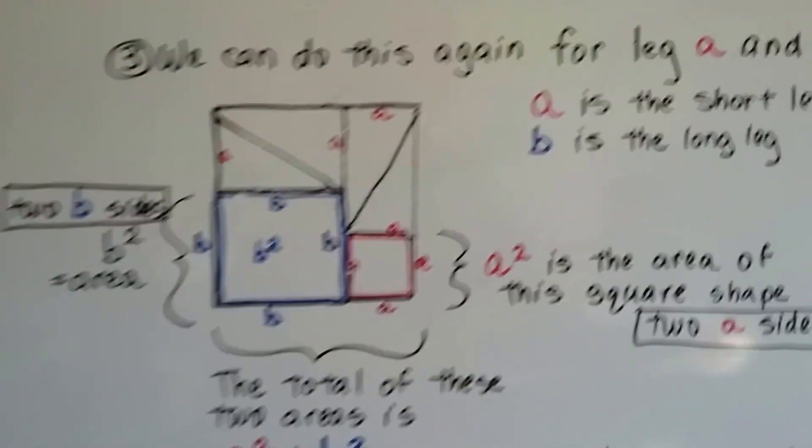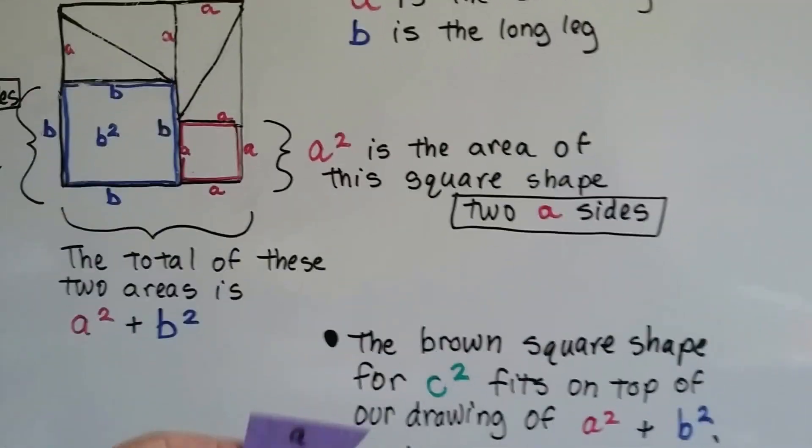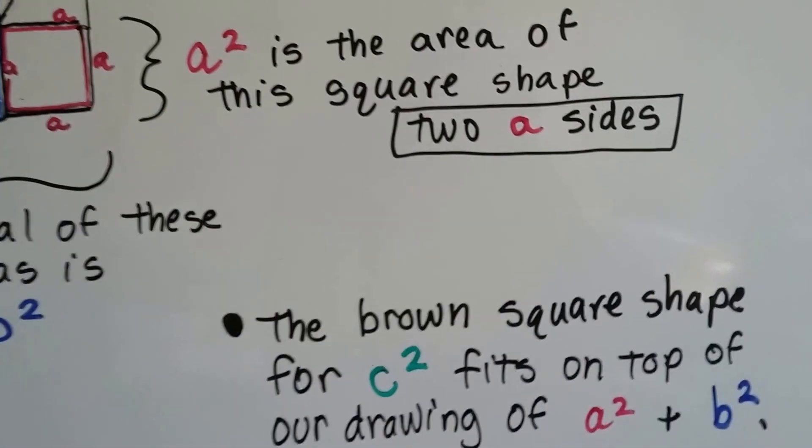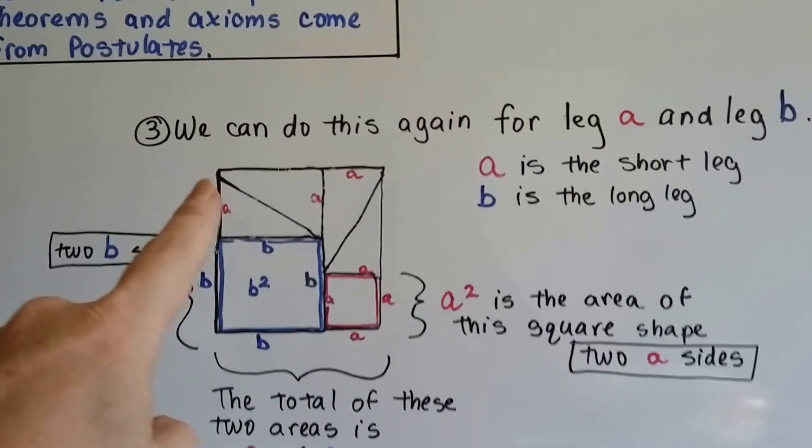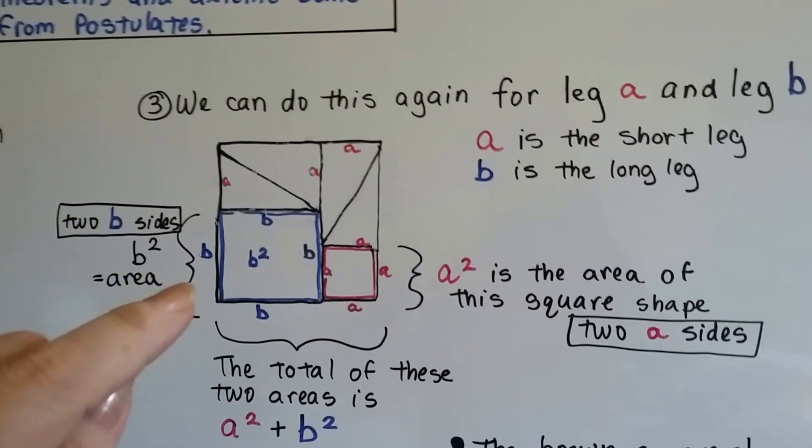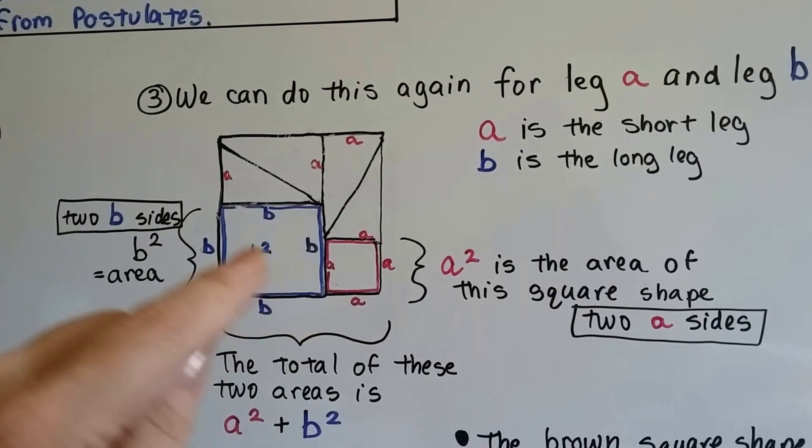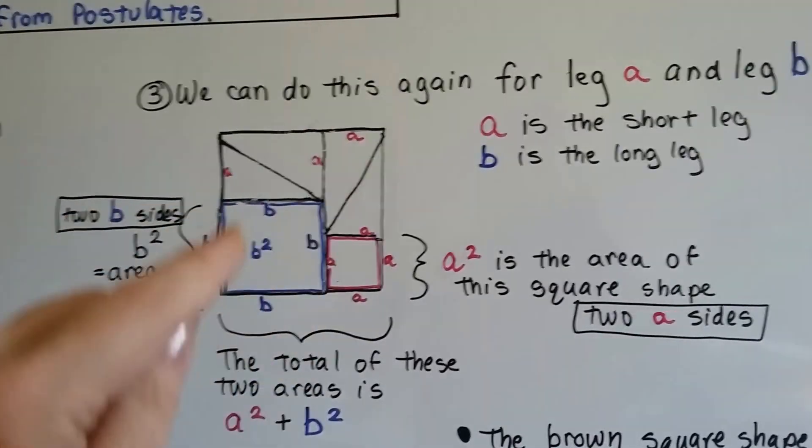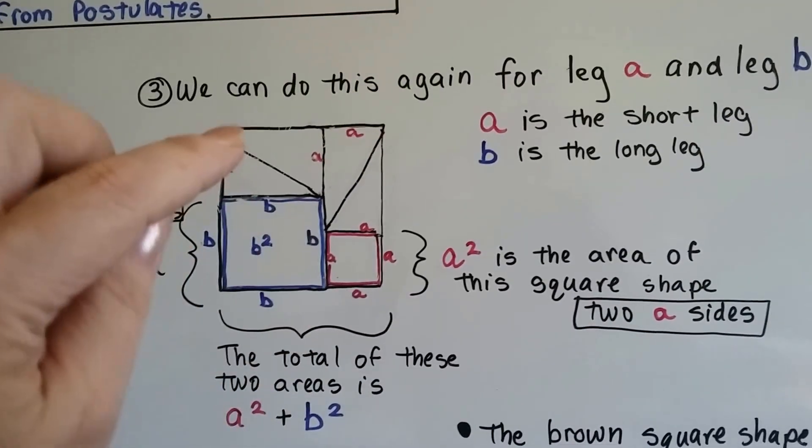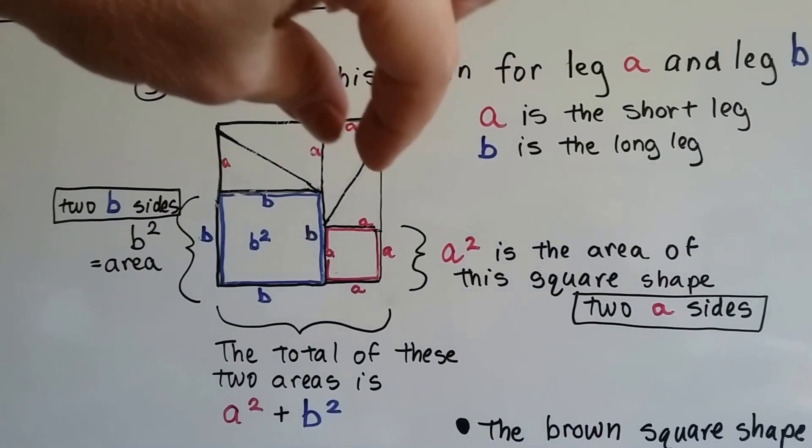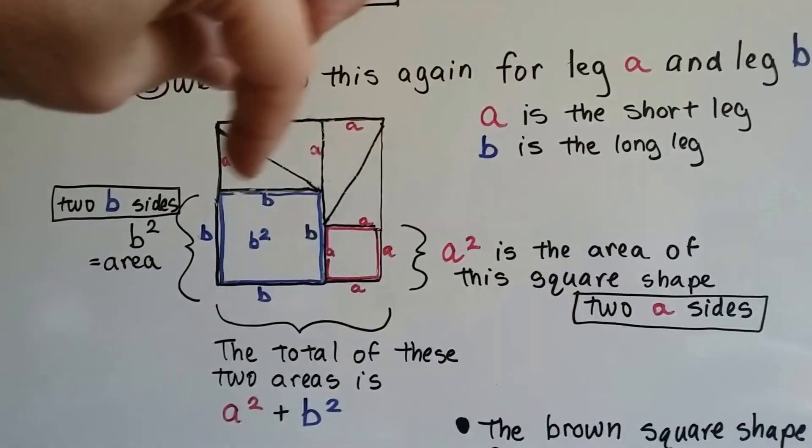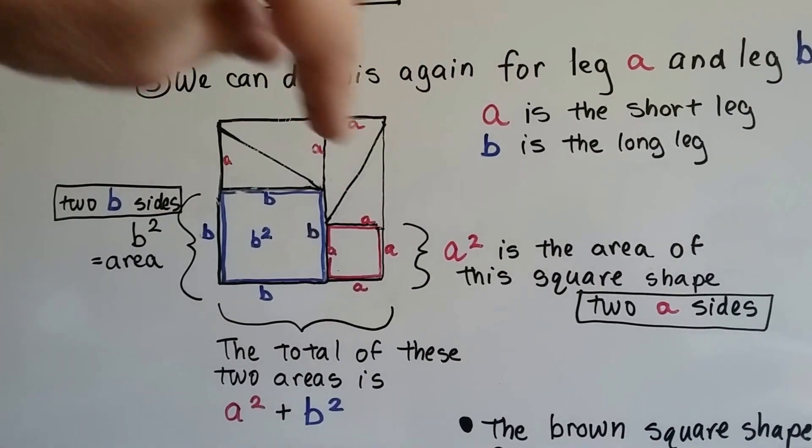Now we can do this again for legs A and B. A is the shorter leg, and B is the long leg. What we do is, we can lay our little triangle shapes and make a square like this. And after making one rectangle here and turning it and making another rectangle here with four of those triangles.